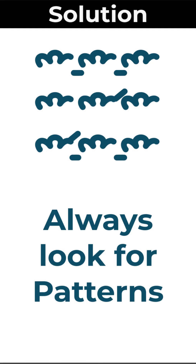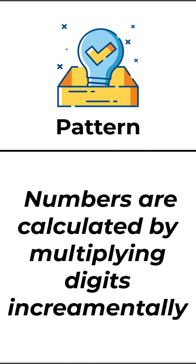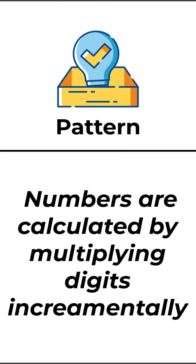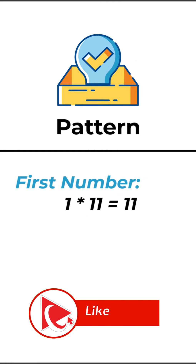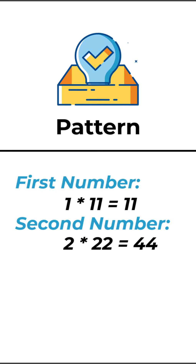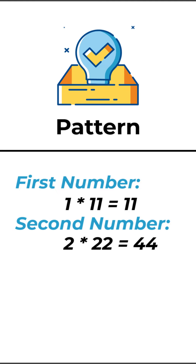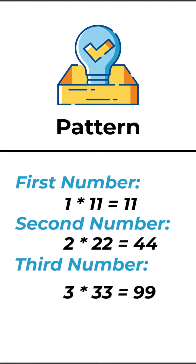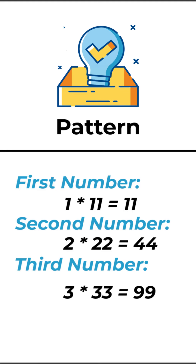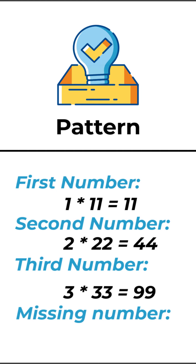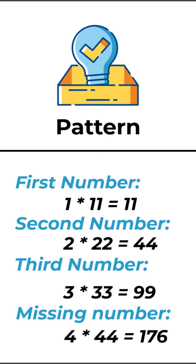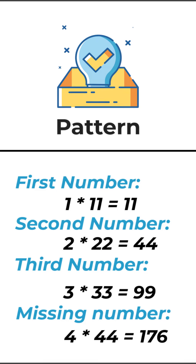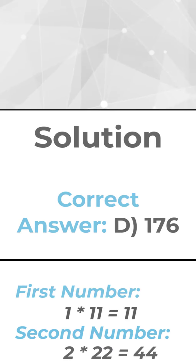Let's look at the pattern for this particular question. The first three numbers are calculated by multiplying single digits incrementally. The first number is 1 multiplied by 11, which is 11. The second number is 2 multiplied by 22, which equals 44. The third number is 3 multiplied by 33, which equals 99. So the missing number is 4 multiplied by 44, which equals 176. The correct choice is choice D, 176.